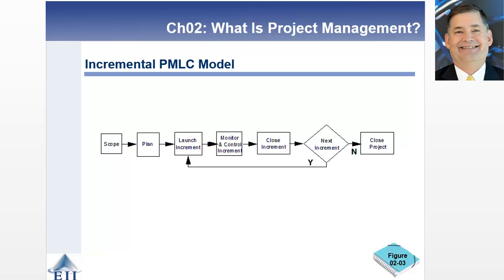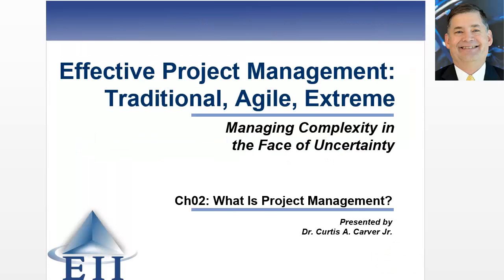That brings us to the end of this video. We've covered a lot: the different types of projects and the project landscape — agile, traditional, and extreme — the linear model, and two traditional approaches: linear and incremental. We also looked at key statistics: 70% of projects are agile, 70% of projects fail, and the value of matching the right project management lifecycle and approach to your project for a greater chance of success. Keep on studying, and I look forward to seeing you in the next video as we continue to explore what is project management.